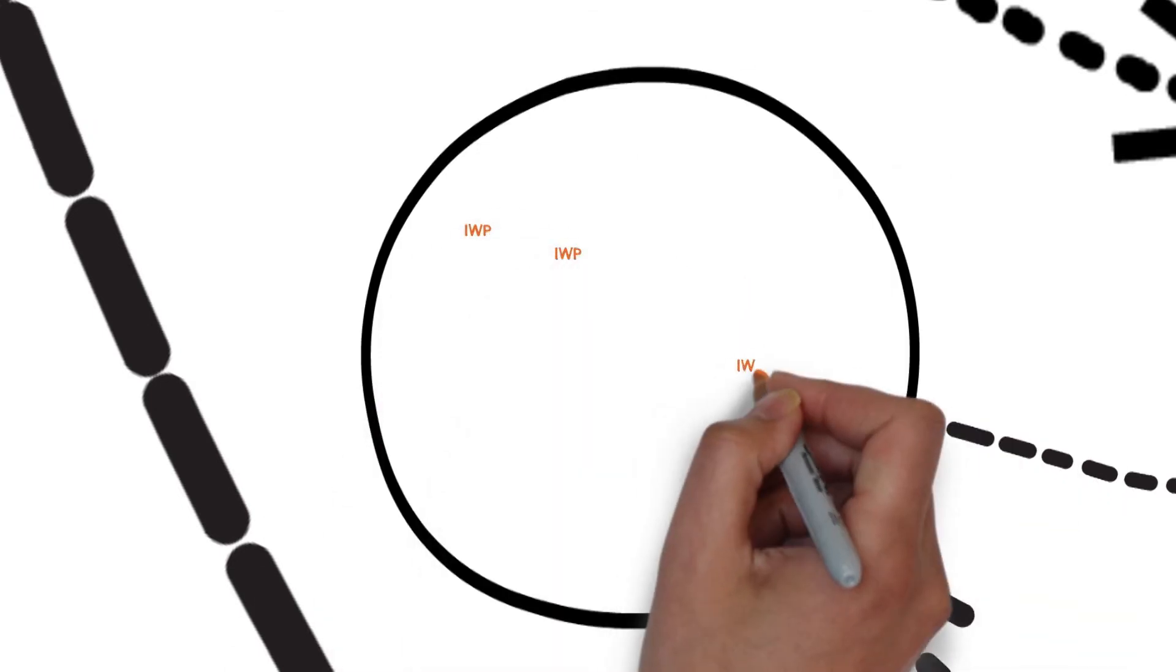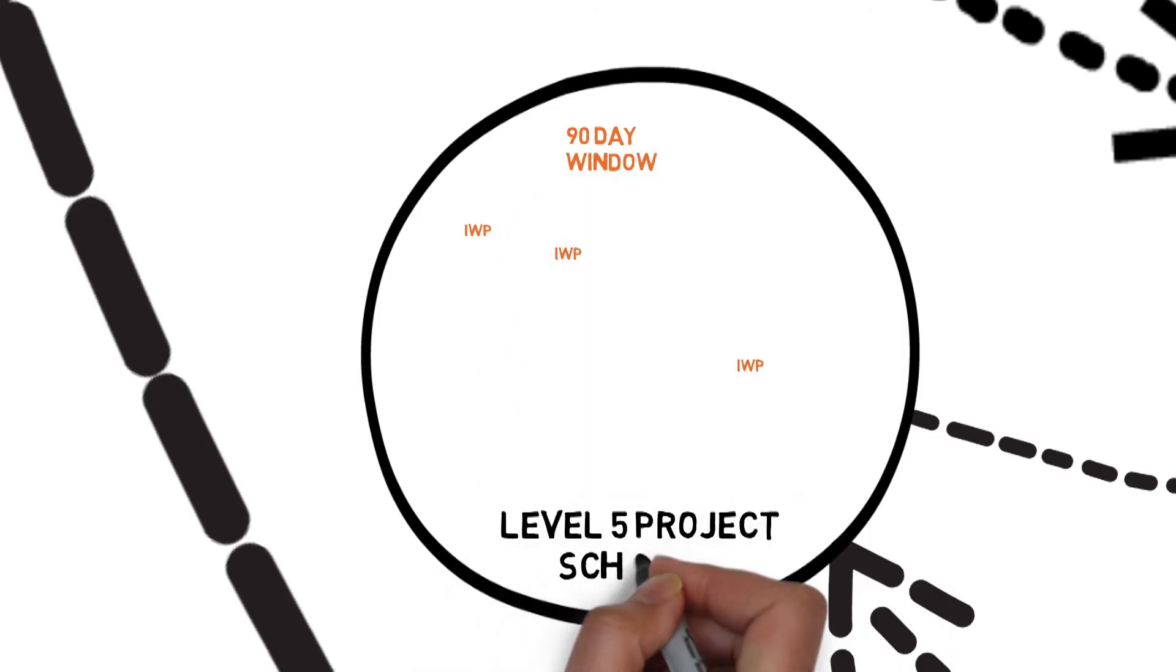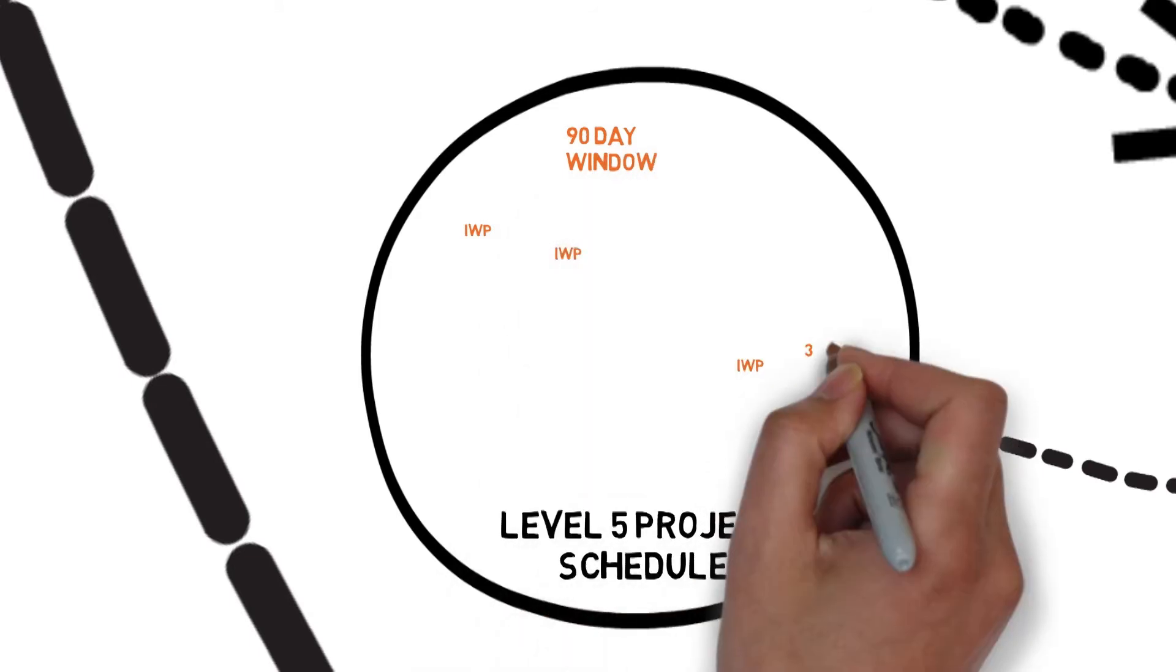The creation of IWPs for each CWP populates the rolling wave 90-day level 5 schedule as individual week-long activities.